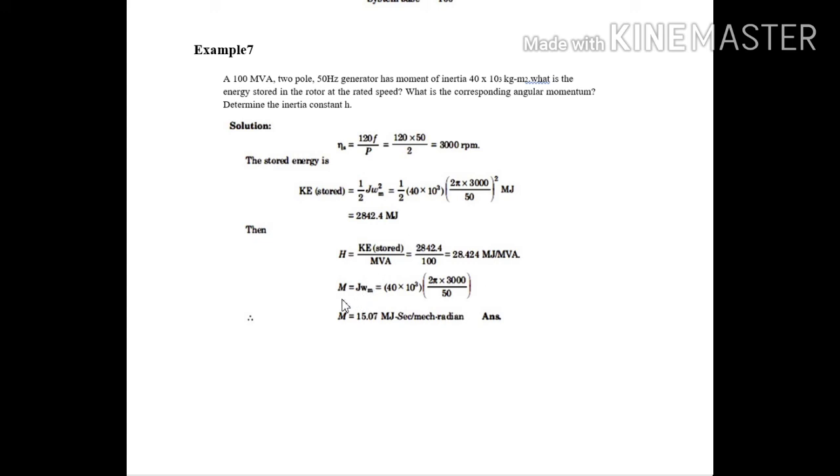Then they ask angular momentum. Again, I know this formula. Angular momentum is J into omega M, that is the moment of inertia into the mechanical angular speed. Substitute the values and we get the answer as 15.07 mega joules per second per mechanical radian. That's all for the problems regarding the unit number 4 and 5.